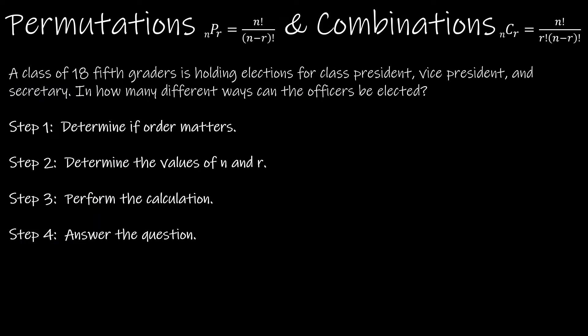Before I bring Excel into it, I want to do a few more practice problems, because Excel will do the calculation for you. But you have to be smart enough to know if it's a permutation or a combination, and what values are N and R. So steps 1 and 2 are things we determine ourselves; step 3 is the only part Excel can help with. For now, we're going to do two questions without Excel.